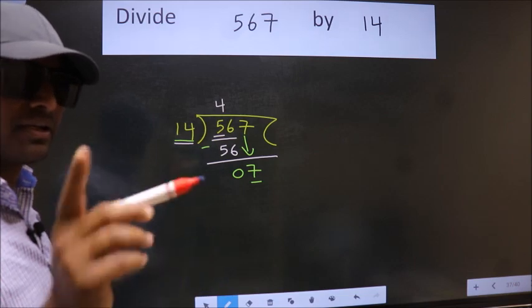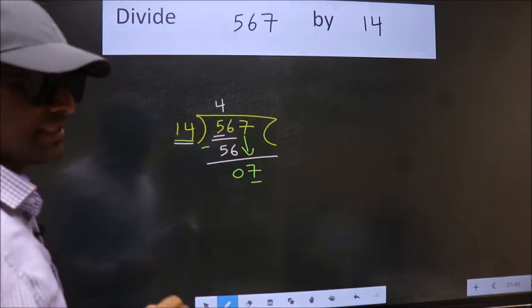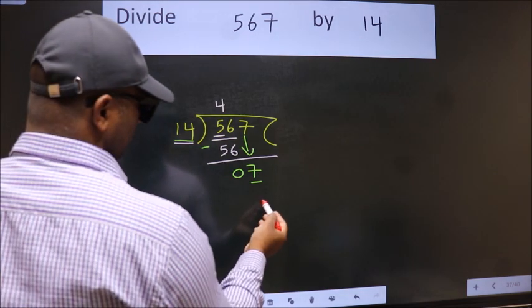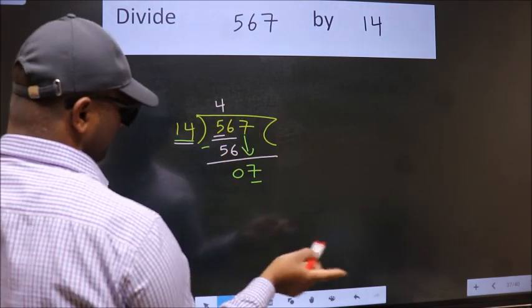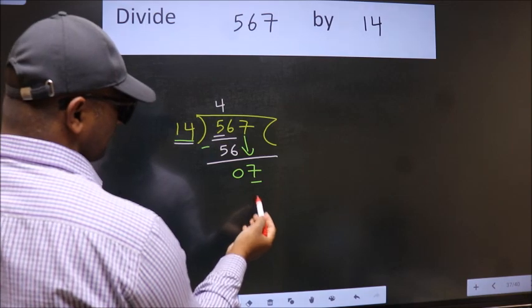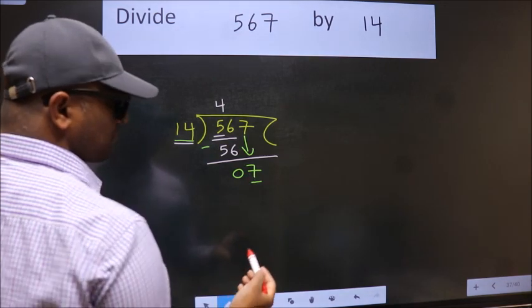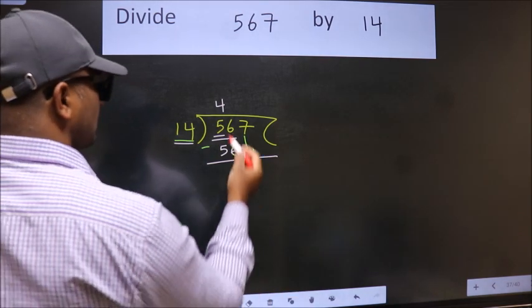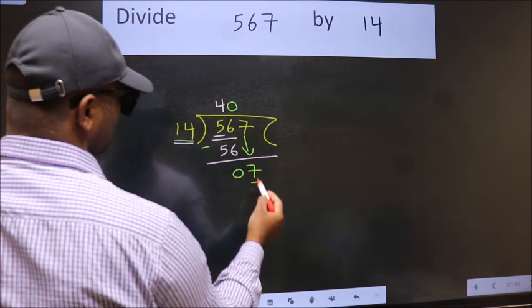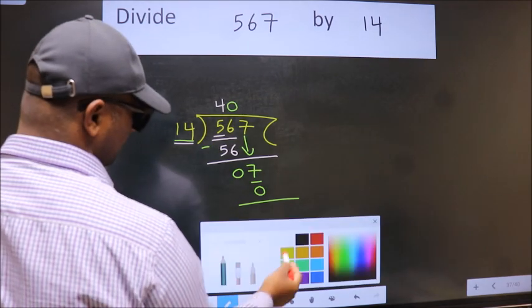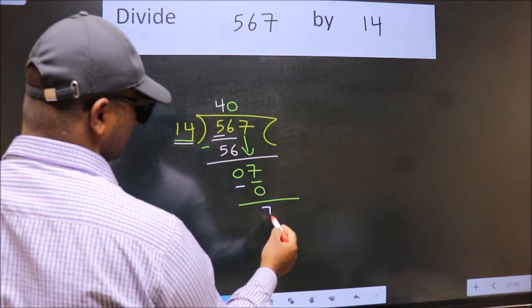Instead of that, what we should think of doing is, which number should we take here? If I take 1, we will get 14. But 14 is larger than 7. So what we do is, we take 0 here. So 14 into 0, 0. Now we subtract, we get 7.